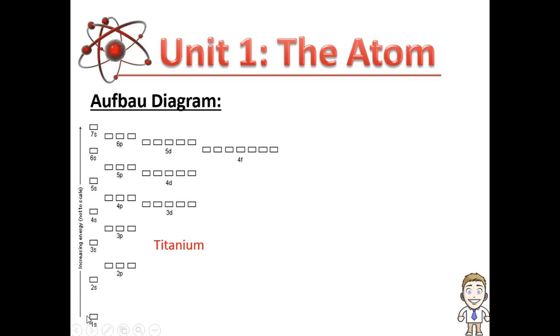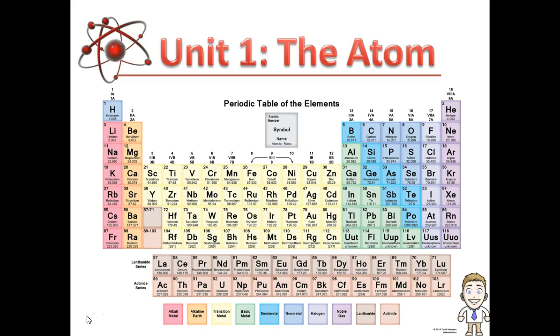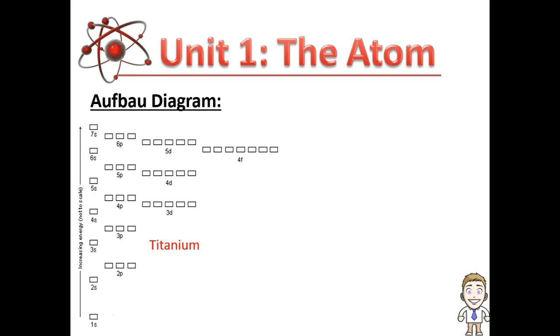To show you how to use this, we're going to do an example configuration with titanium. First thing you need is a periodic table to look up titanium. It has 22 protons, which means a neutral atom would also have 22 electrons.